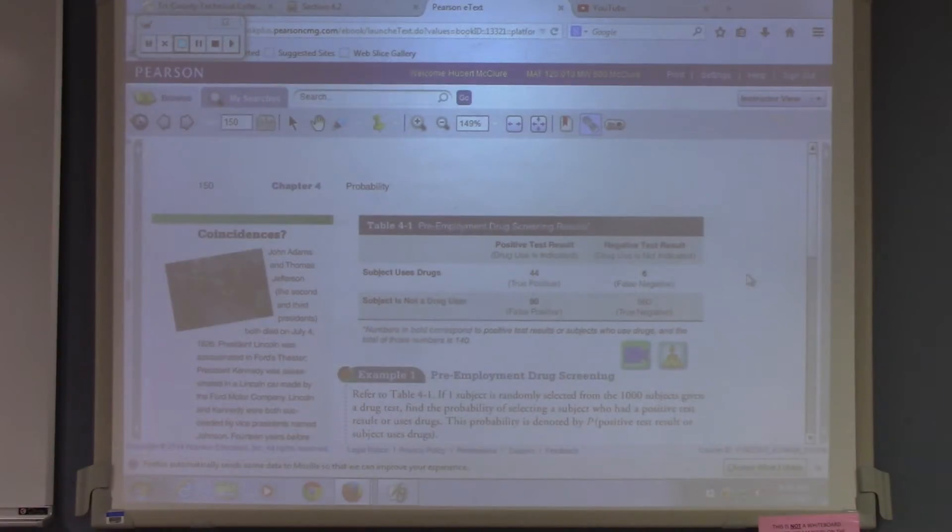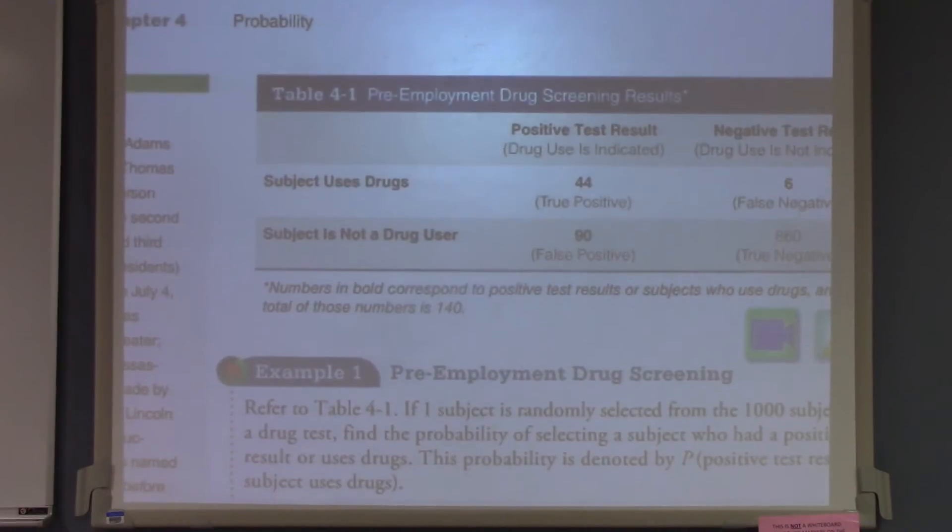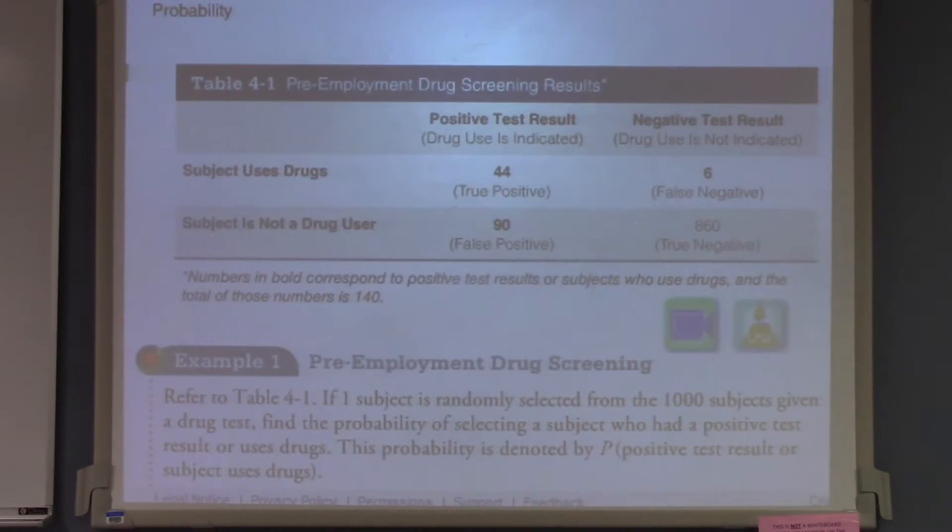Take a look at this example. This is about losers. Pre-employment drug screening results. I want you to tell me the probability of a positive test result and a person uses drugs. Go ahead and write the table down. You need to write it down. Just put subject uses drugs, 44 to 6. Subject uses drugs, put an X through it, 90 and 860. Put a positive up here and put a negative here. That's it.